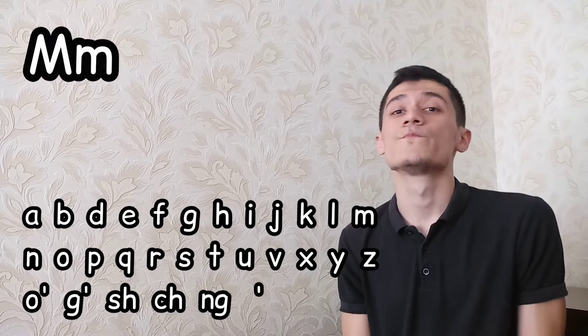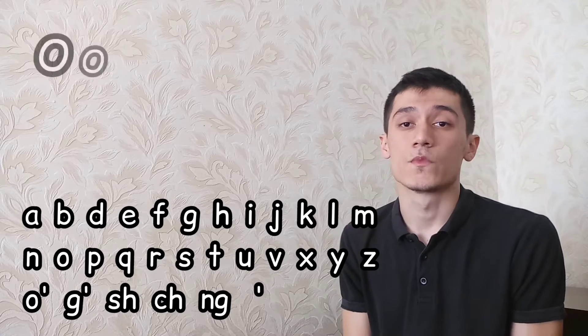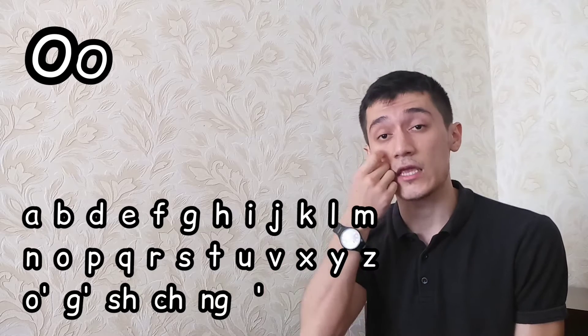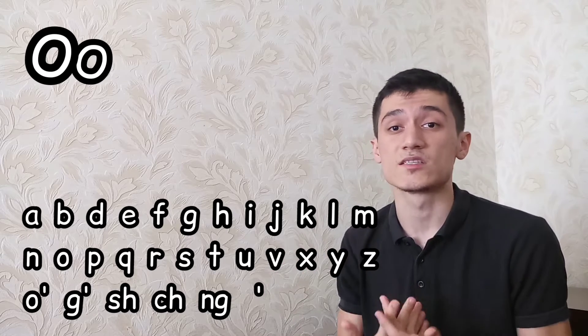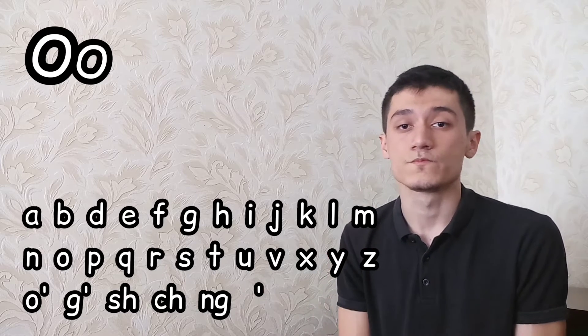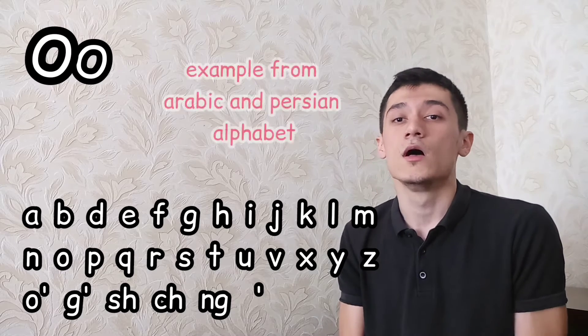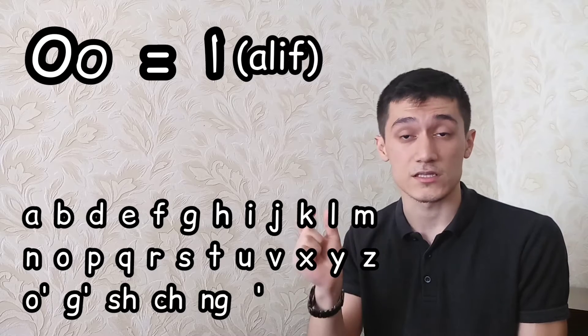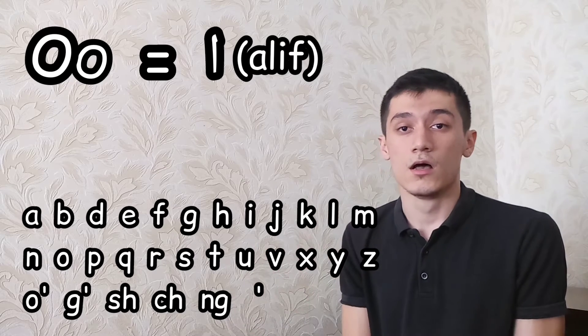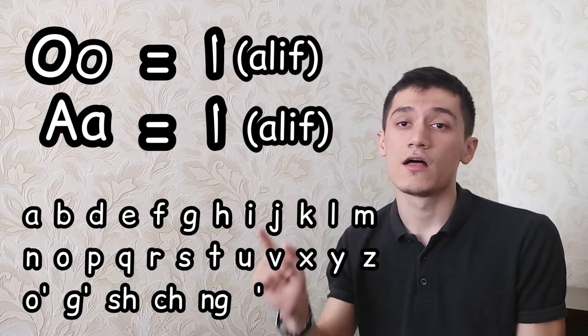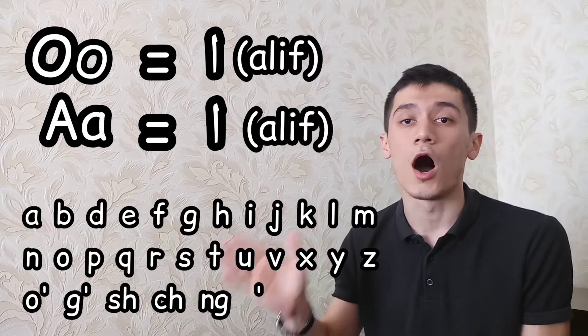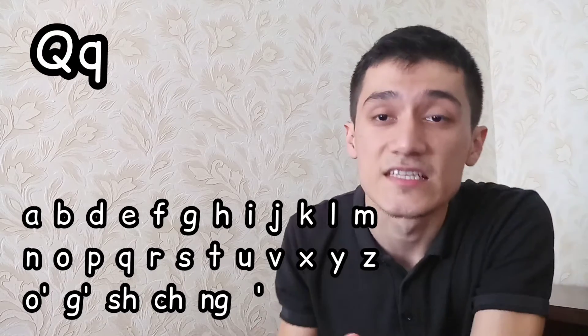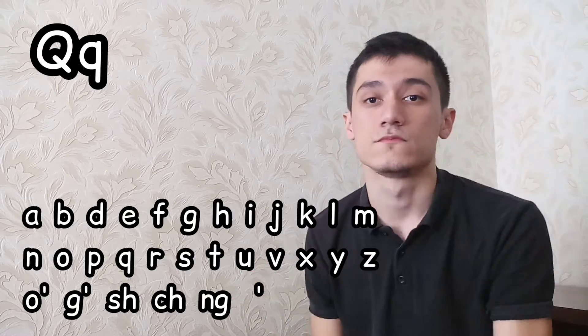This one is very hard because it is not 'oh'. Let me give you an example from Arabic and Persian alphabet - the alif equals this letter. The alif sometimes equals 'ah', which is the first letter, and sometimes equals this 'o' sound. It is not 'K', it is 'q'.